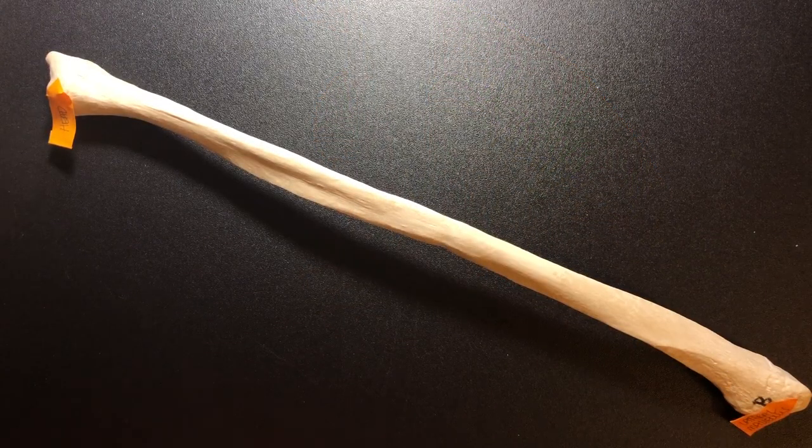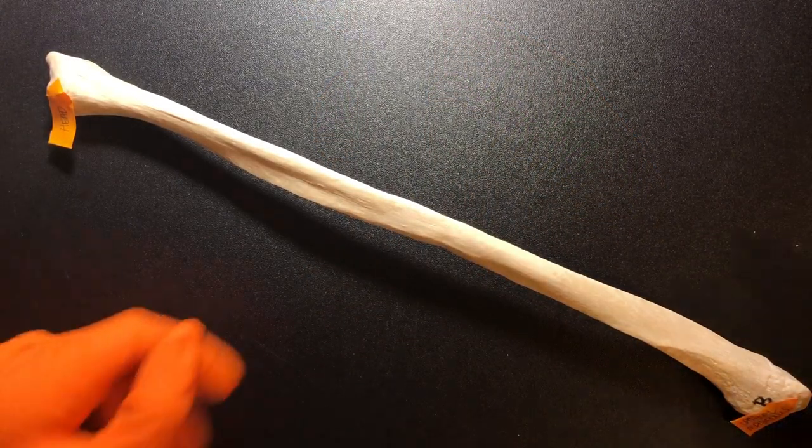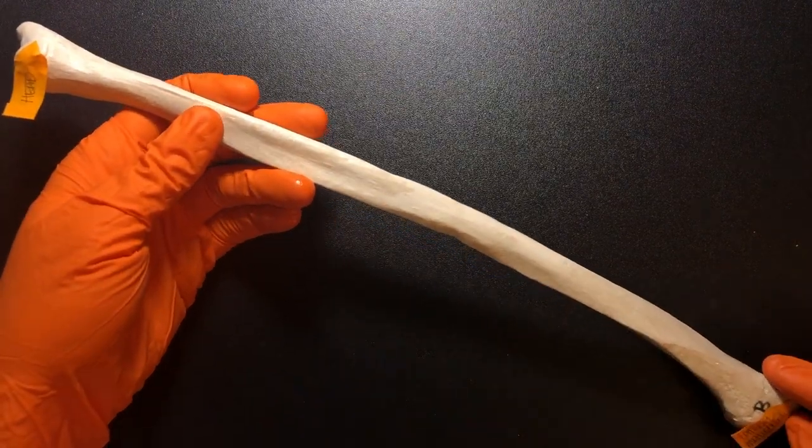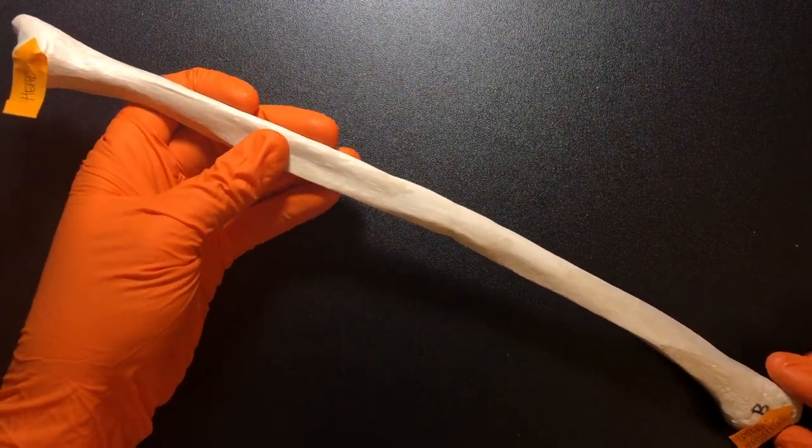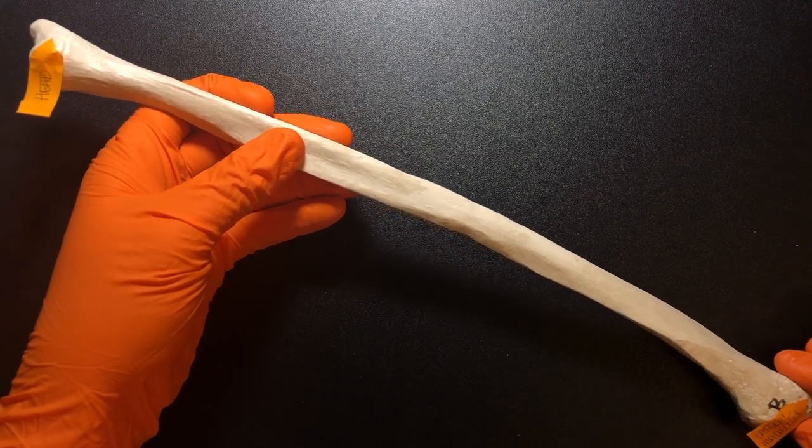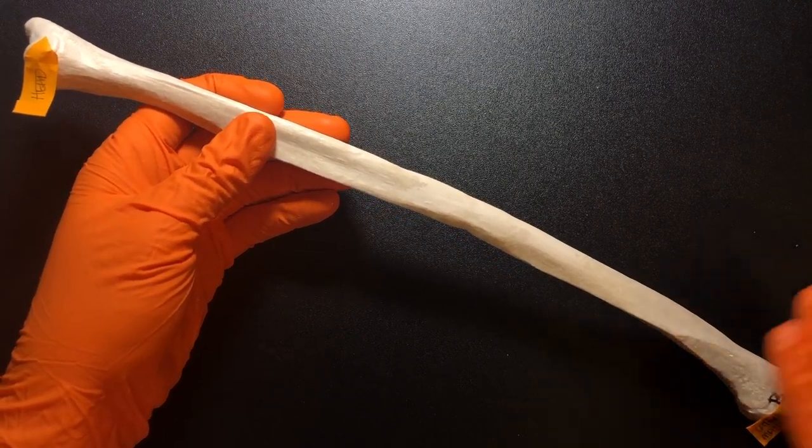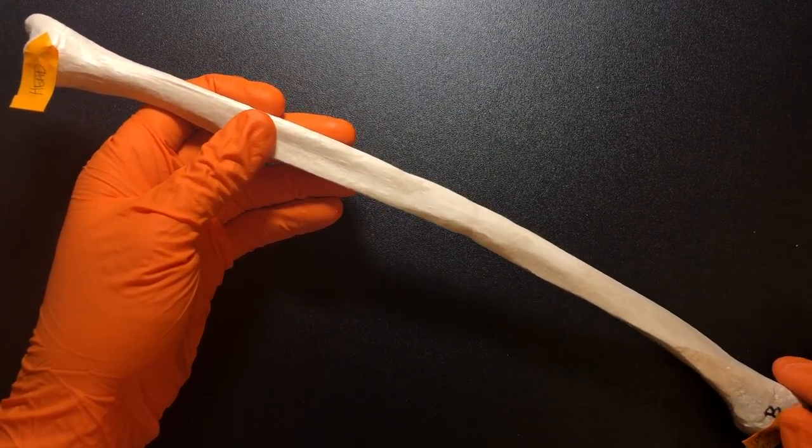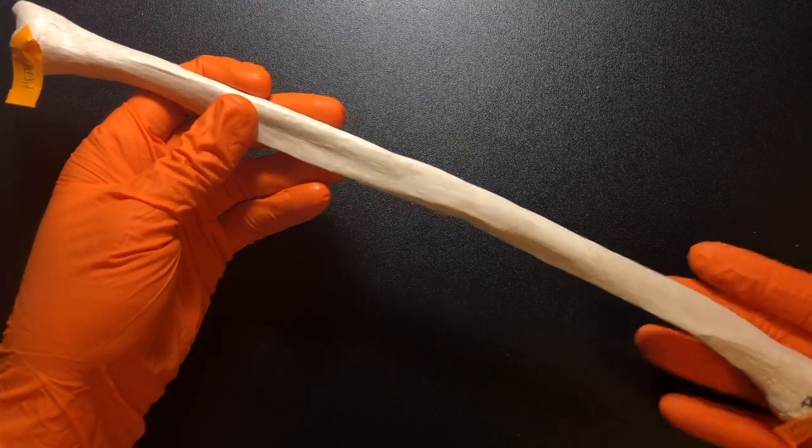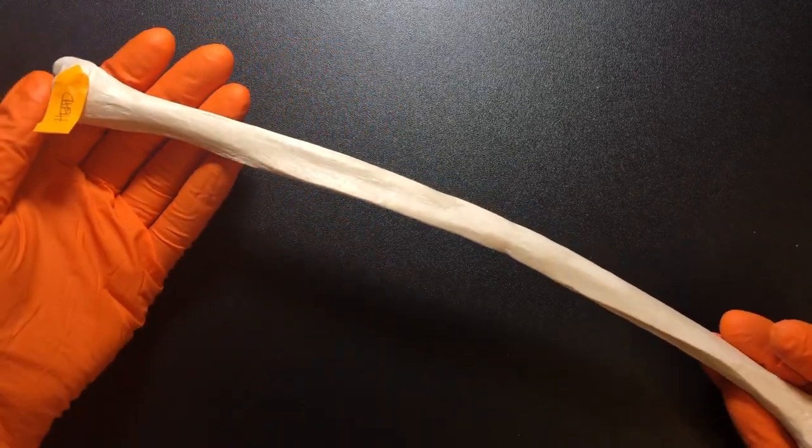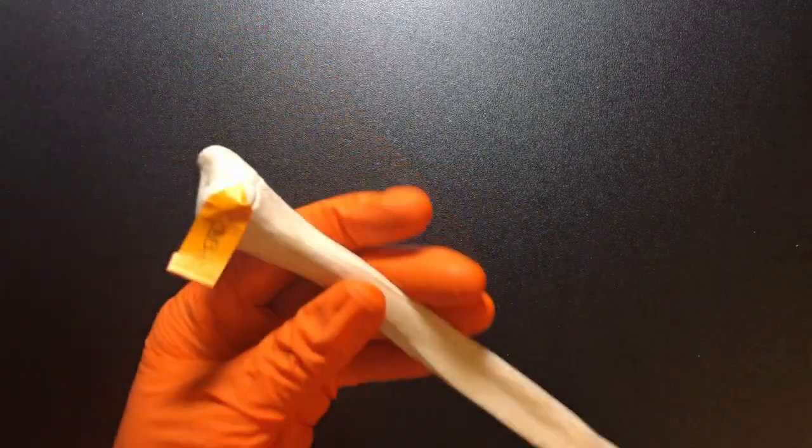Okay, this is the fibula. This is going to be the long, skinny, lateral bone of the anatomical leg. And I just have a couple of very basic things to point out on this bone. How do we tell which end is proximal and which end is distal?